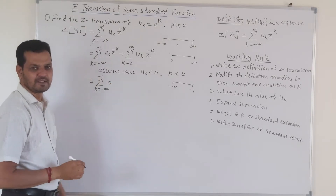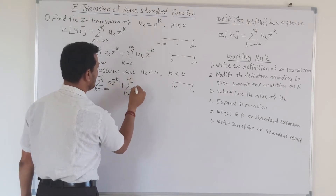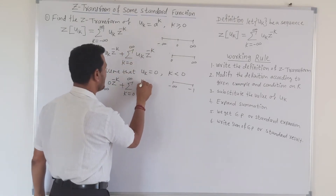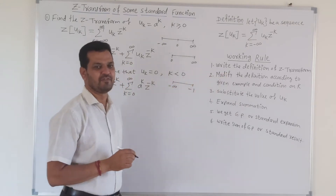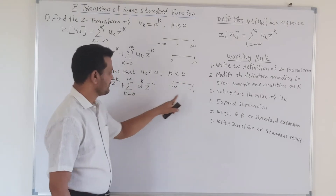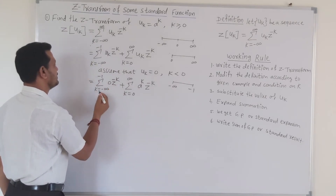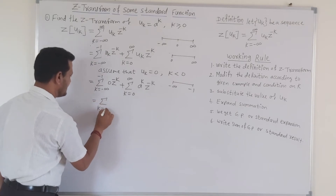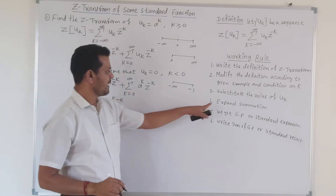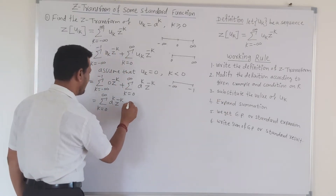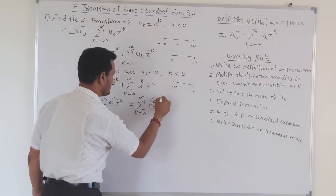After substituting the value of u_k, the first summation becomes 0 times z raised to minus k, which is 0. So we reach the term: summation from k equals 0 to infinity of a raised to k times z raised to minus k. Our aim is to expand this summation sign. For simplicity, we write this as summation of (a/z) raised to k.